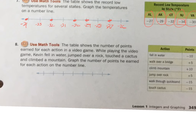Graph the number of points he earned for each of his actions. So let's graph. Kevin fell in water. So Kevin fell in water, that's going to be a negative 10. Then he jumped over a rock. Jumped over a rock, that's going to be a positive 5. Touched a cactus. Where's a cactus? Right here. And climbed a mountain.